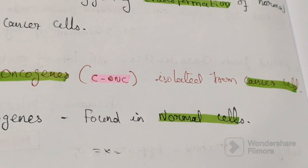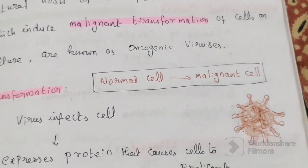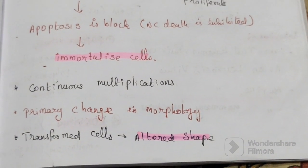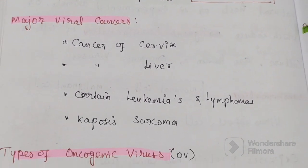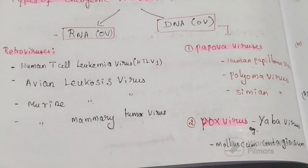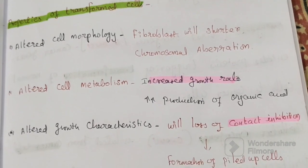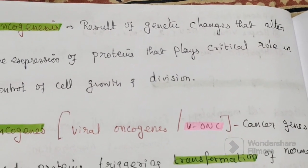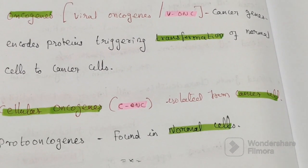In summary, this video discussed oncogenic viruses: how normal cells transform into malignant cells through continuous multiplication, primary changes in morphology, microtumor formation, types of oncogenic viruses (RNA and DNA), five important properties of malignant cells, and the concepts of oncogenesis, oncogenes, cellular oncogenes, and proto-oncogenes. Thanks for watching.